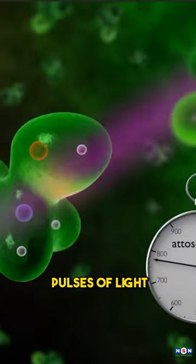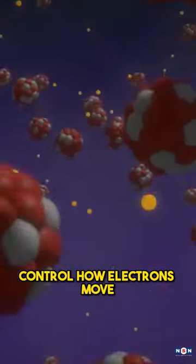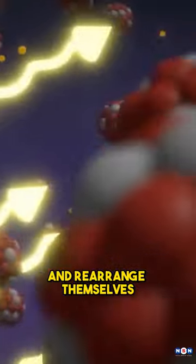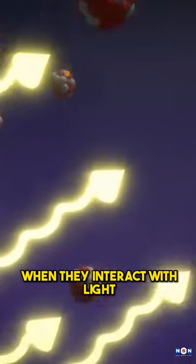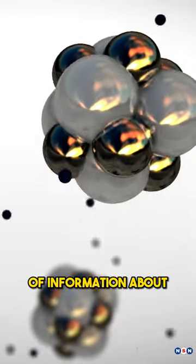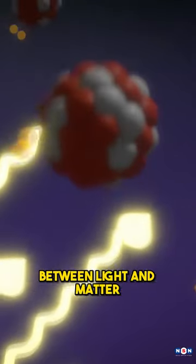By using attosecond pulses of light, we can observe and control how electrons move and rearrange themselves when they interact with light. This can reveal a lot of information about the nature of matter and the interactions between light and matter.